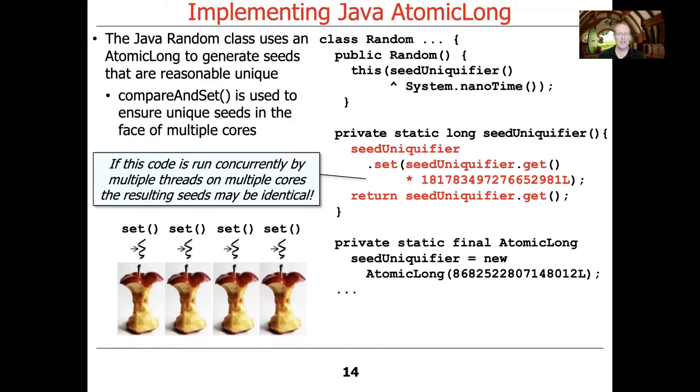So if the code is run concurrently on multiple threads on multiple cores, the resulting seeds may in fact be identical if we just used the code like this. So the point of this, you know, the point of doing all this stuff we're talking about here is to ensure that there are unique seeds for the different cores.